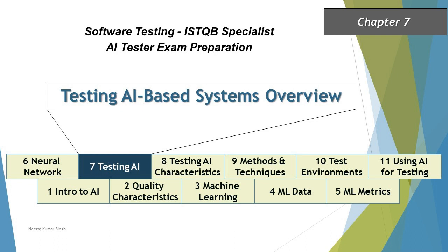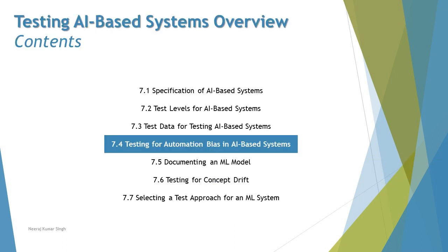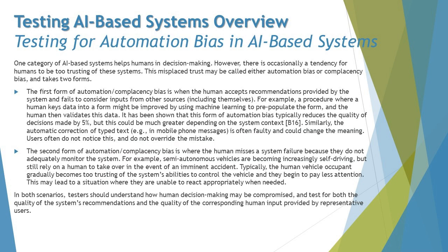Hello friends, greetings for the day — welcome back to another tutorial on ISTQB AI Tester Certification. We are in Chapter 7, talking about how to test AI-based systems. We are continuing with section 7.4: Testing for Automation Bias in AI-Based Systems — a small and straightforward topic.